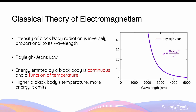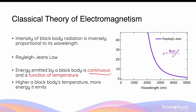Before discussing blackbody radiation in more detail, I want to talk about how we arrived at the current model. Prior to the current model, the classical model of physics predicted a drastically different result. It predicted that the intensity of blackbody radiation is inversely proportional to its wavelength — as wavelength shortens, intensity increases. This was known as the Rayleigh-Jeans law. The classical model also hypothesized that energy emitted by a black body is continuous and a function of temperature.